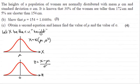Hi there. Now for the next part, part C, we need to obtain a second equation and hence find the value of μ and the value of σ for four marks.